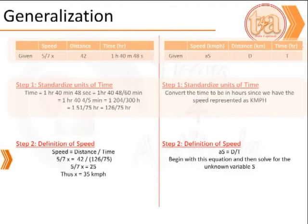Having converted the units of time appropriately, we begin with the definition of speed, that is speed is equal to distance by time. In this case, it is A times the initial speed S is equal to distance D divided by time T. We then solve for the speed variable S.